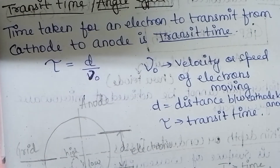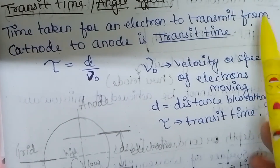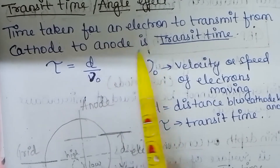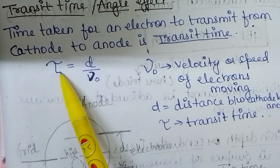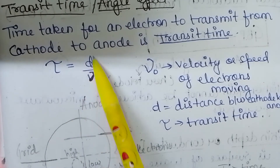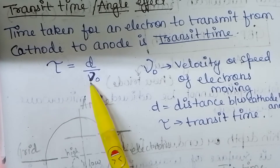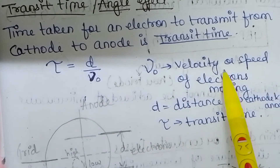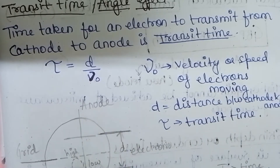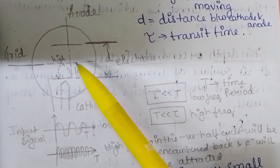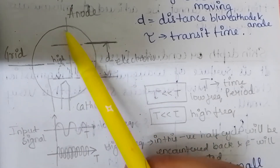The third limitation of the conventional tube is the transit time effect. The time taken for an electron to travel from cathode to anode is known as the transit time, represented by τ = d / v₀, where v₀ is the velocity of the electrons and d is the distance between the cathode and the anode.